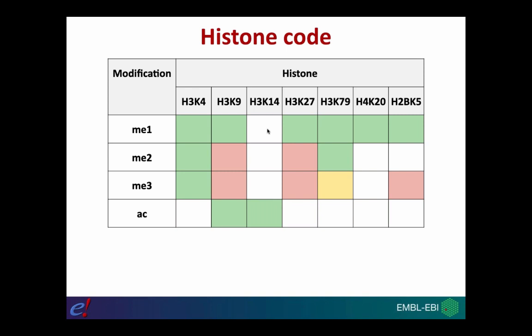Generally, some modifications are associated with a positive regulation of gene expression and some negatively affect it. For example, monomethylation of lysine 4 of histone 3 (H3K4me1) is generally associated with an increase in gene expression, whereas trimethylation of lysine 9 of histone 3 (H3K9me3) is associated with a down-regulation of gene expression.